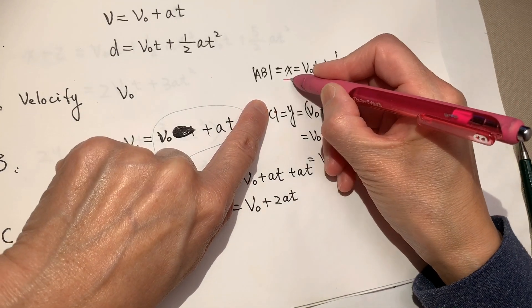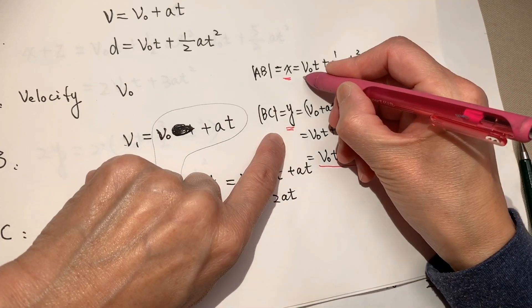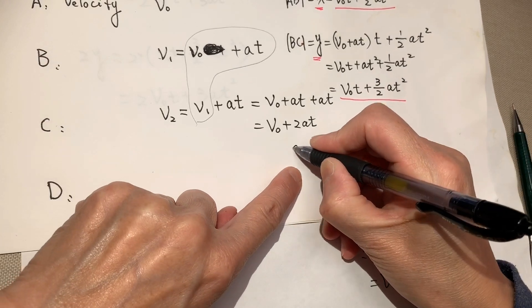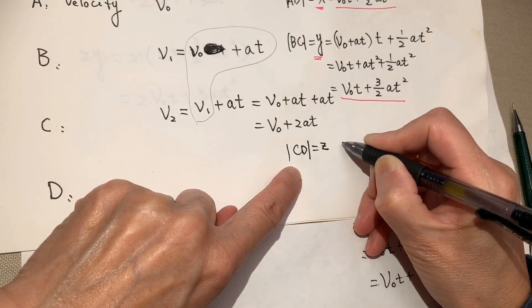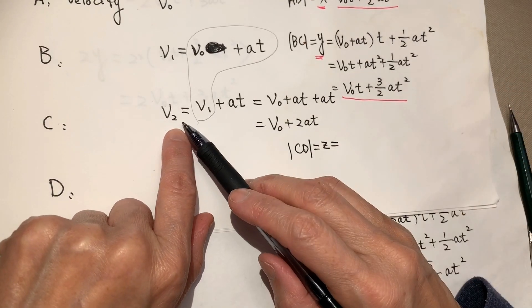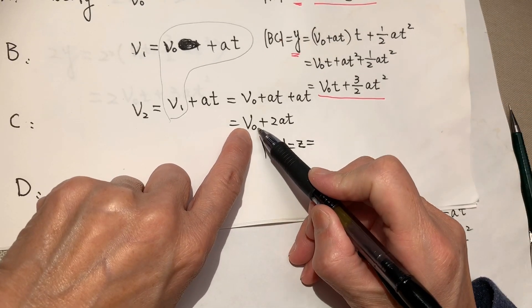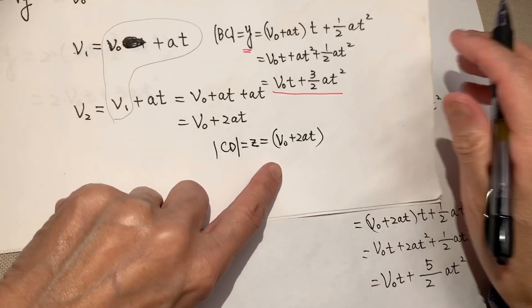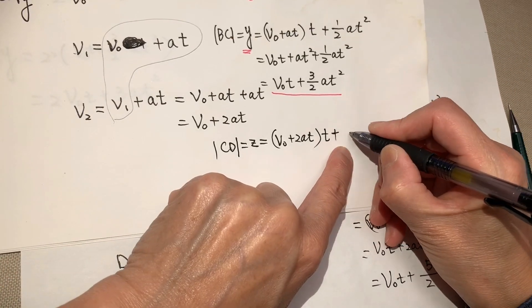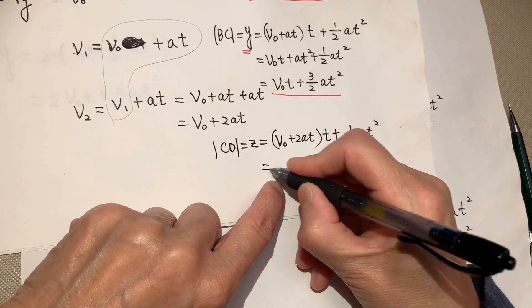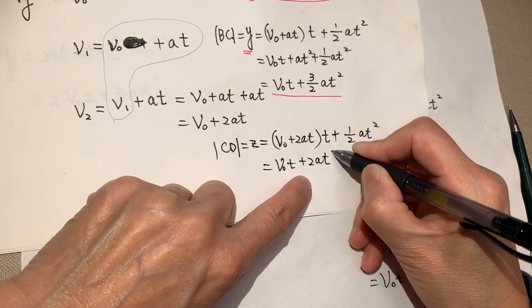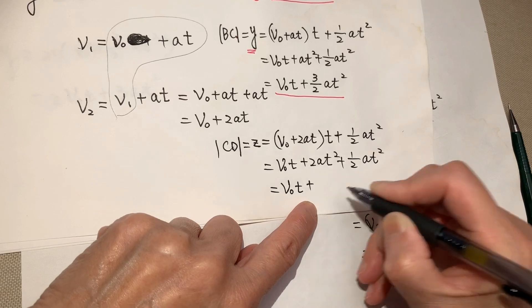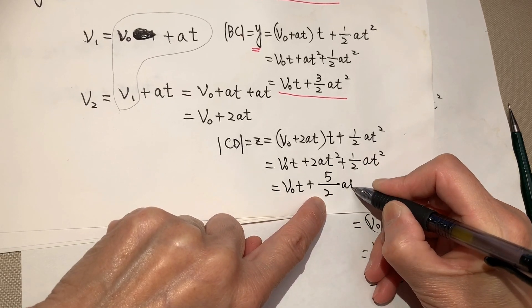Okay. So this is Y, X, Y here, X here, Y here. And from C to D. CD equal to Z, and this initial speed is V2. V2 is V0 plus 2AT. So V0 plus 2AT, initial speed times time plus half AT squared. Equal to V0T plus 2AT square. Plus half AT squared. Equal to V0T plus 5 over 2 AT squared.